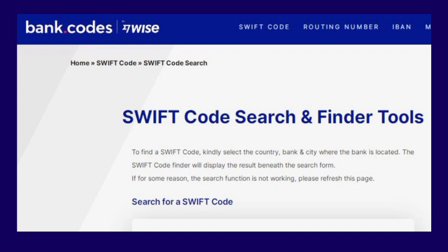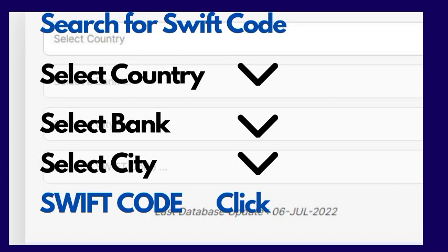There is a drop-down menu. From the drop-down menu, you select. First, you select your country — whether you are from India, USA, Germany, Japan, South Africa, Nigeria, or any country. Once you have selected your country, proceed to the next step.